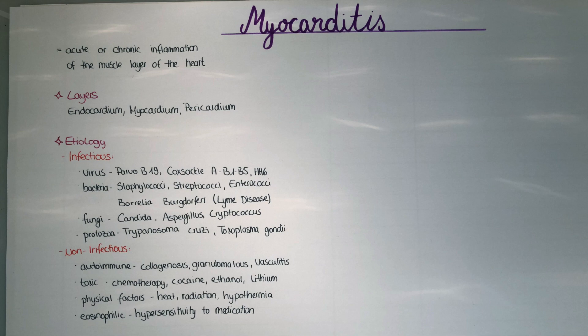Non-infectious causes of myocarditis include autoimmune diseases like collagenosis, as in systemic lupus erythematosus, granulomatous diseases like sarcoidosis, and vasculitis, rheumatoid arthritis, or the acute form rheumatic fever. Toxic causes include chemotherapy for cancer treatment, as well as cocaine, ethanol, and lithium. Physical factors like heat, hypothermia, or radiation can also cause myocarditis.